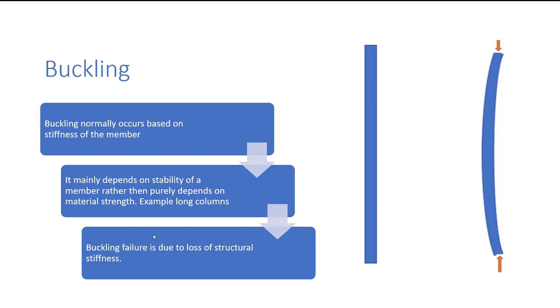Long columns undergo buckling because of the failure of the stiffness rather than the material. It mainly depends on the stability of the member rather than purely on the material strength. Simply, we can say the buckling failure is due to loss of structural stiffness. In order to design the member, we have to make sure that external loads are within the limit of the stability - it should maintain the stability or stiffness of the member for design and safety purposes.